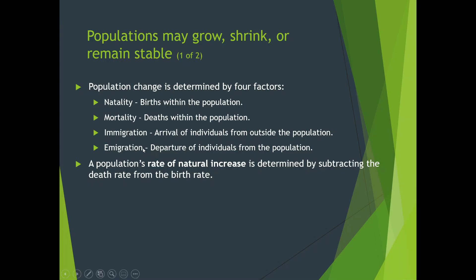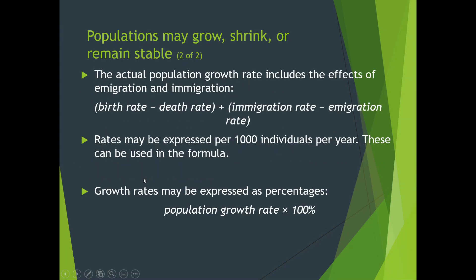If it weren't for immigration to the United States, our population would be going down. This is the same for many industrialized nations — Europe, Japan, and Australia. The more developed nations are almost all seeing a negative natural increase in population. Growth rates may be expressed as a percentage: population growth rate times 100%. When a population increases by a fixed percentage each year, it is called exponential growth.